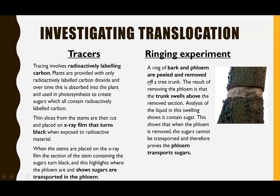Another way to investigate translocation is called ringing experiments. A complete ring of bark and phloem is removed from the tree, as seen here. Over time, the part of the tree above the ring will start to swell, because the phloem has been removed so the sugary solution can't be transported any further down. To prove it is a sugary solution, samples of the liquid are taken and tested for sugar — confirming that it is the phloem that transports sugars, because when the ring of phloem is removed the sugars don't get transported any further.